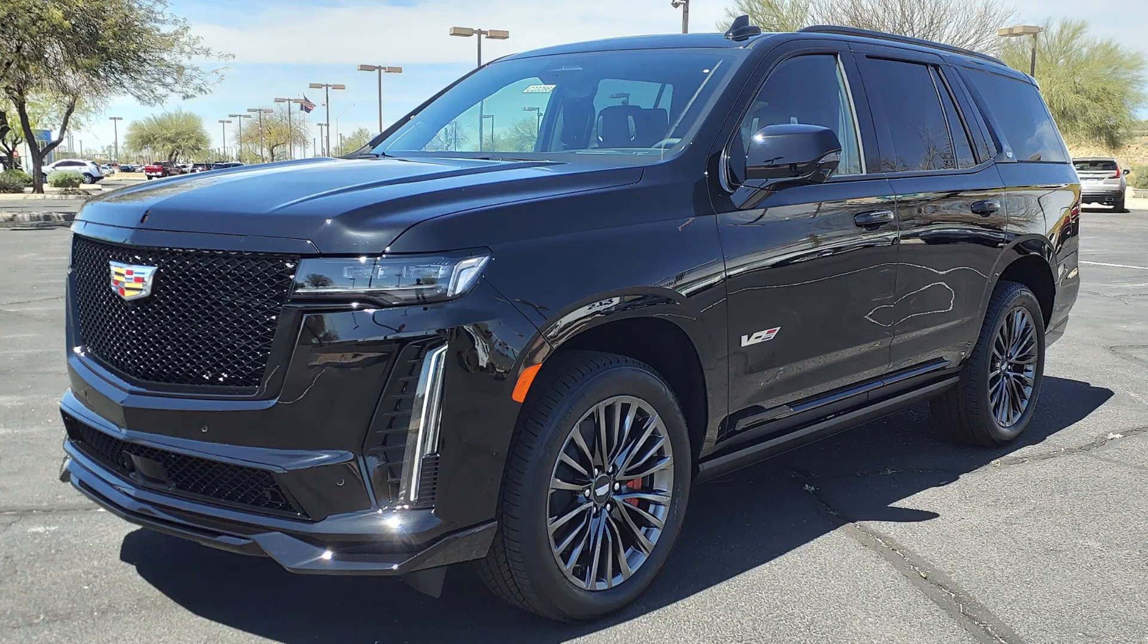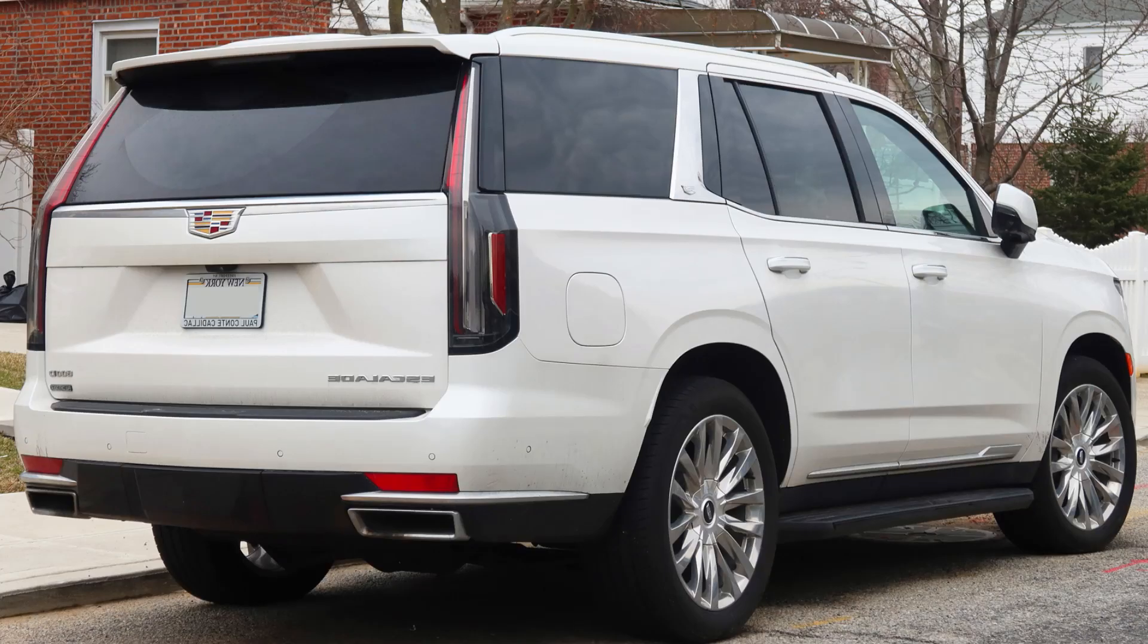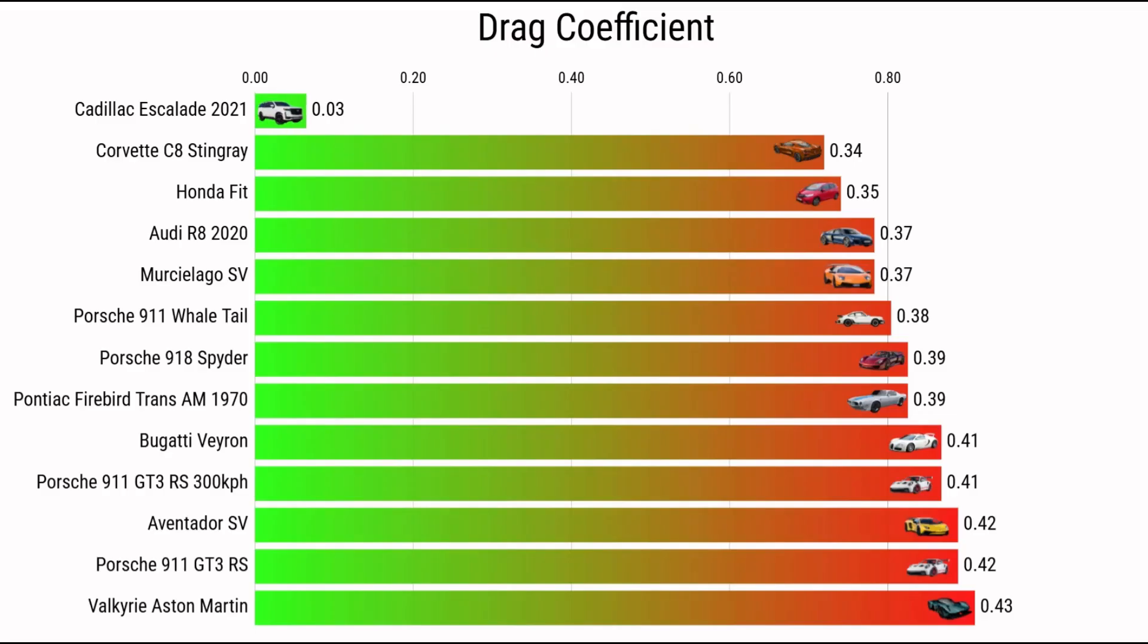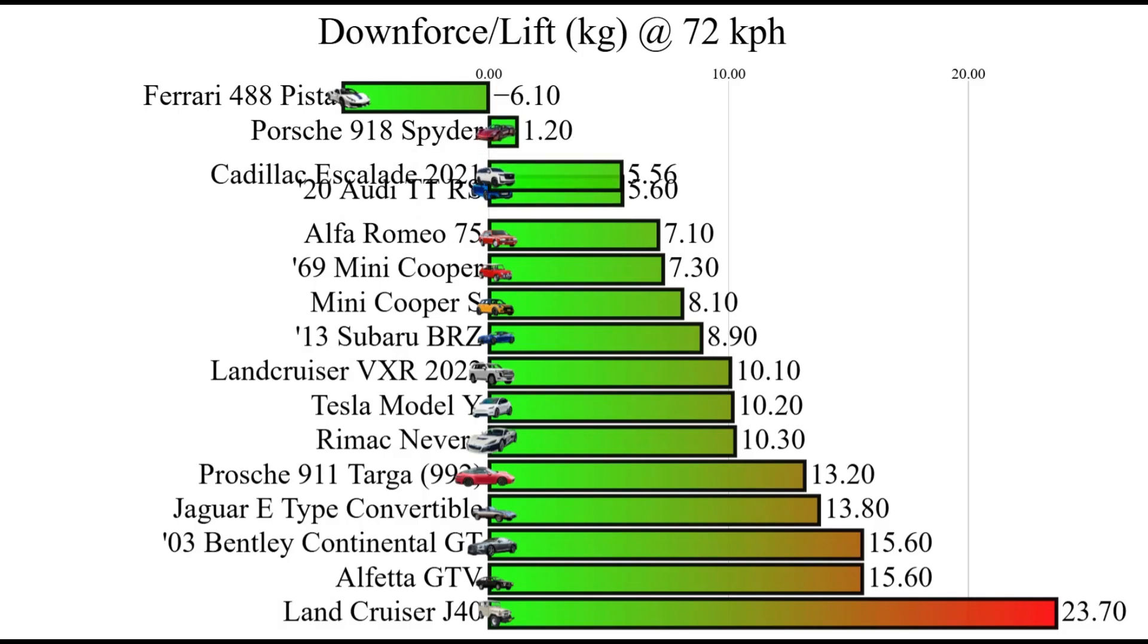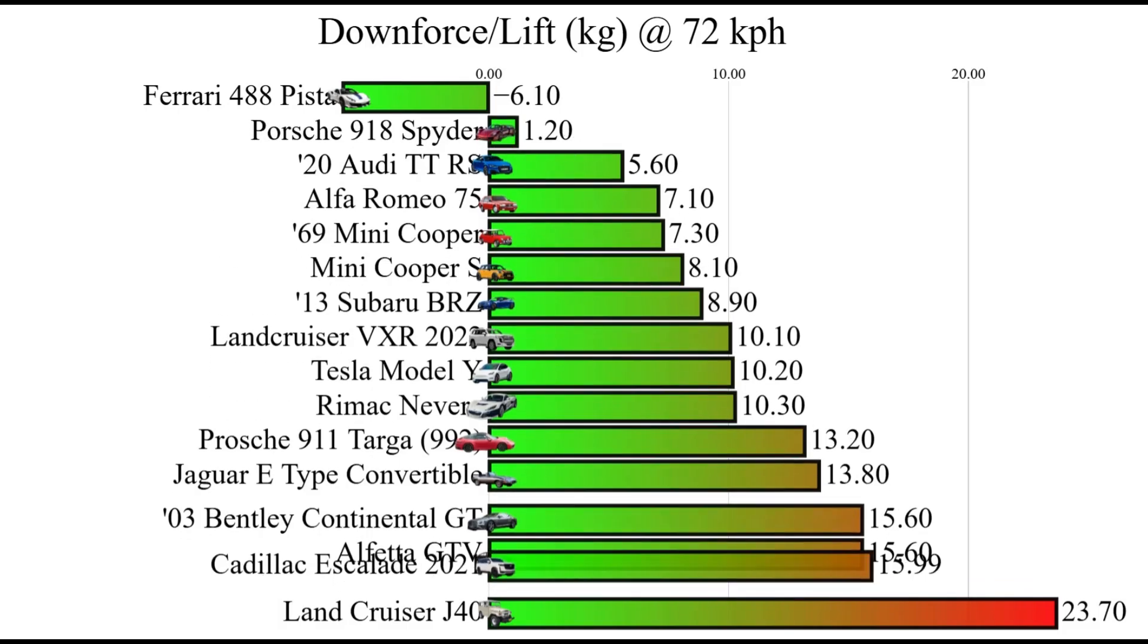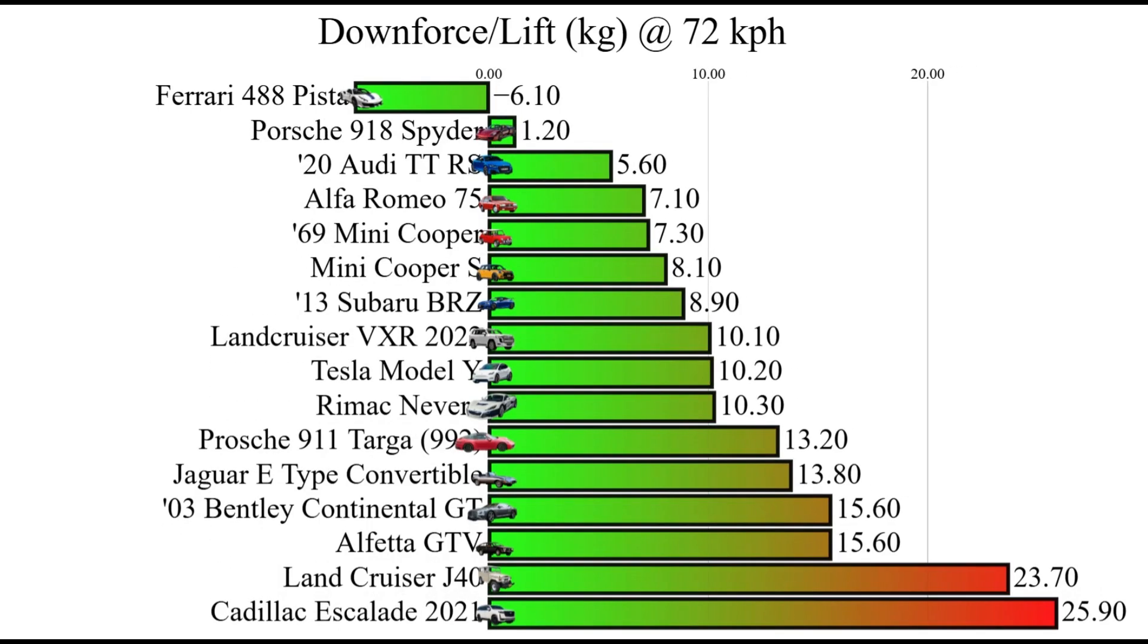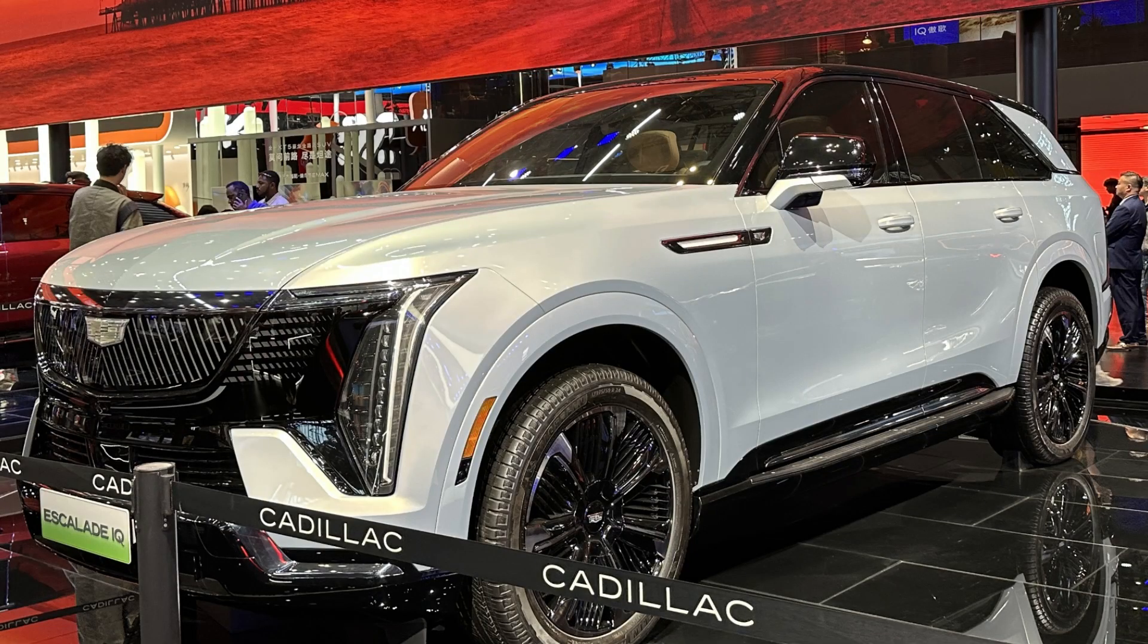So while the Escalade definitely has some bad regions, there are a number of really well thought out regions too. Several aero devices were added to dramatically reduce its drag coefficient. As such it came in at 0.38, which might not seem impressive, but considering what the shape is to begin with, a brick, it is impressive. The lift, which was not a high priority for Cadillac, came in at 25.9 kilograms. That is why the Escalade is way more aerodynamic than you think.